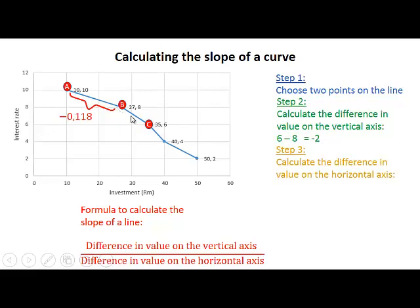The difference in value on the horizontal axis: investment increased from 27 to 35. So the difference between the two points is the value at C, 35 million, minus the value of investment at B, 27 million. The difference is 8 million.